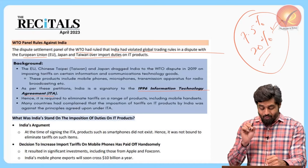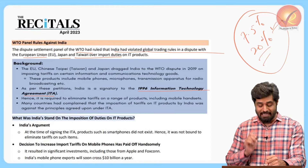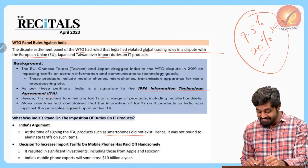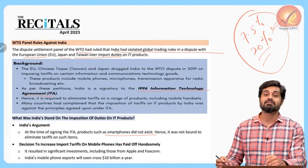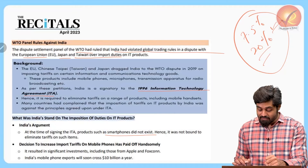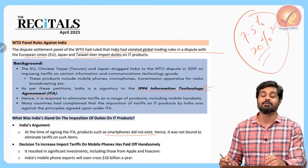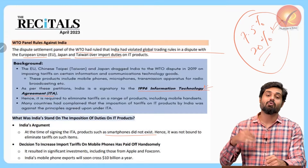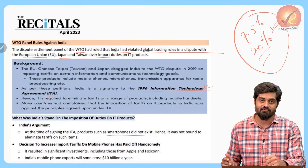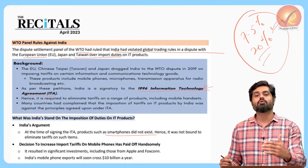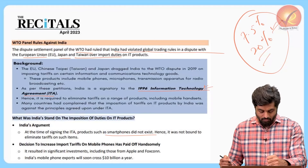India's position is that smartphones did not exist at the time when the Information Technology Agreement was signed. Therefore, smartphones cannot be covered under the agreement, and India is justified in imposing duties on them.